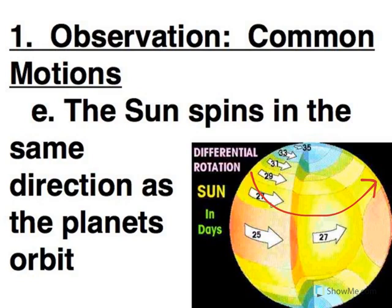So pretty much everything in our solar system follows that same direction of motion. That's telling us that whatever we formed out of had to have had that rotation before the planets or sun ever formed.